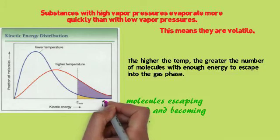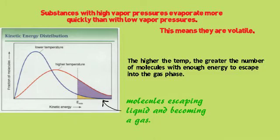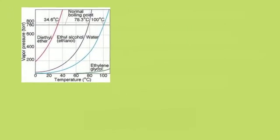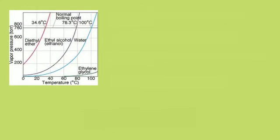There it is. This diagram is showing a graph between vapor pressure, torr, and temperature. It's got a couple of different substances showing on it.